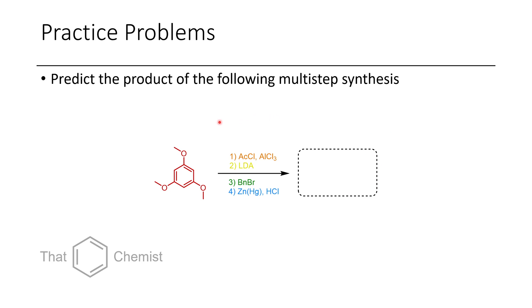In the final multi-step synthesis problem: take an electron-rich arene and treat with acetyl chloride and aluminum trichloride; then treat that product with LDA; then with benzyl bromide; and finally with zinc amalgam and HCl — a Clemmensen reduction. Draw the structure of the final product. In the next lecture I'll draw the structures of the intermediates as well.